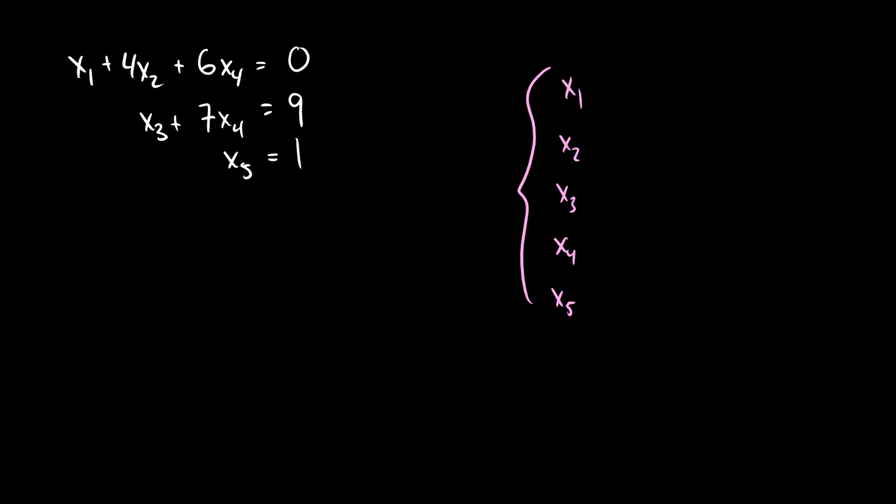So let's do a full example here. We have x1 plus 4x2 plus 6x4 is equal to 0, x3 plus 7x4 is equal to 9, x5 is equal to 1.